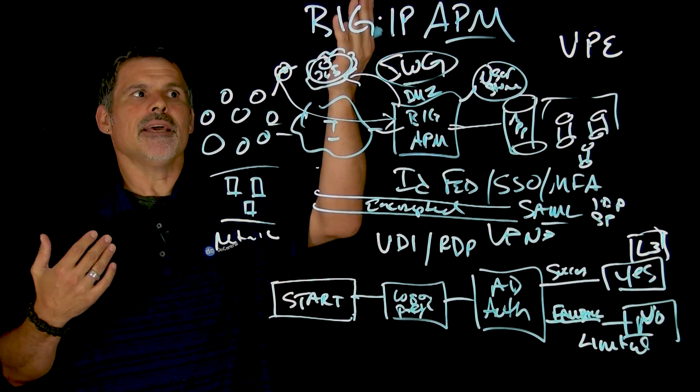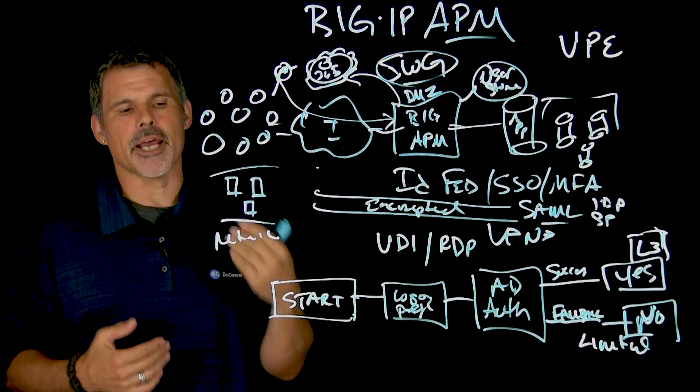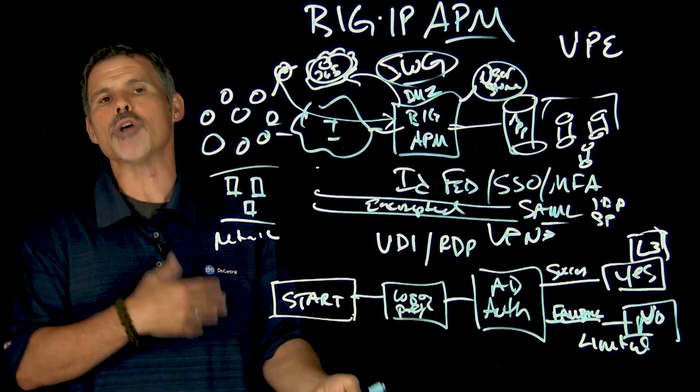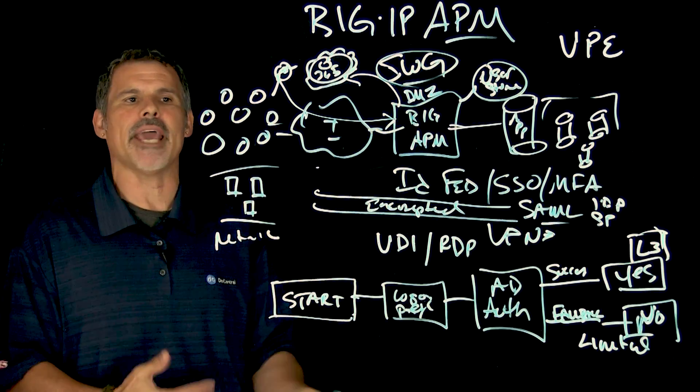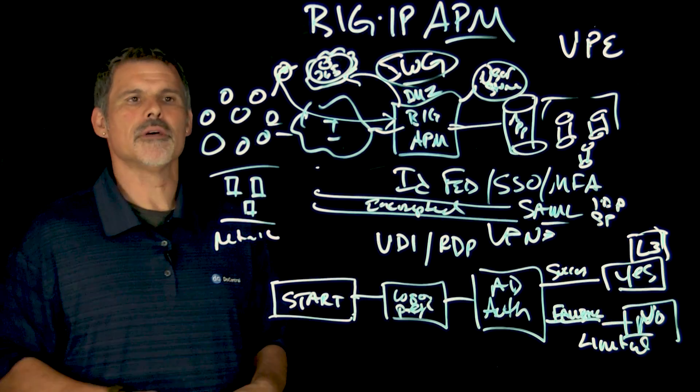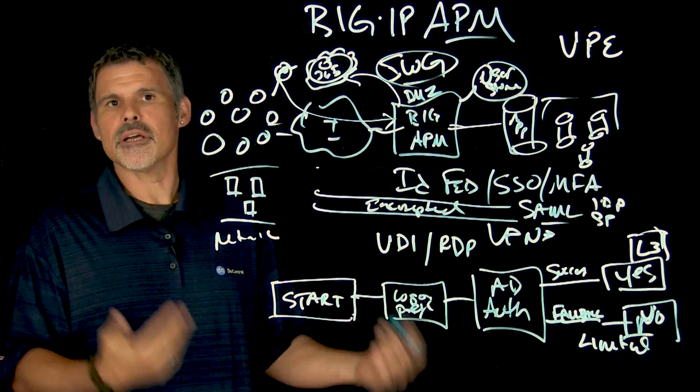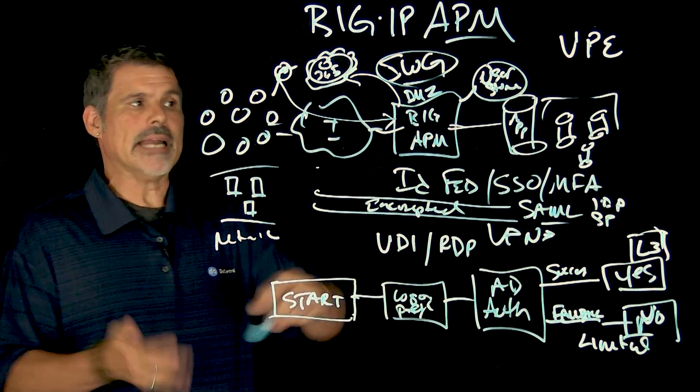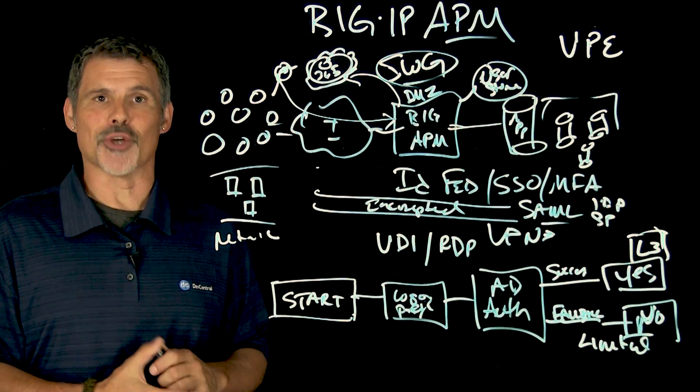So Big IP Access Policy Manager can help you manage access, but also protect your applications for those users, employees, contractors, and partners that are remote and need to gain access to internal resources.